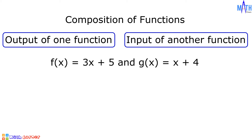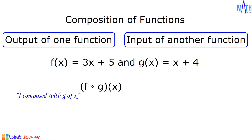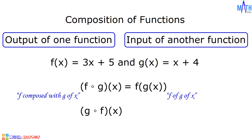f of x equals 3x plus 5 and g of x equals x plus 4. Composition of functions is denoted by this notation, which can be read as f composed with g of x, and it is equal to f of g of x. If we reverse the order, then we have g composed with f of x, which is equal to g of f of x.